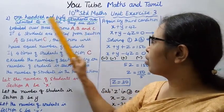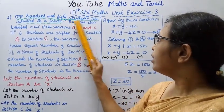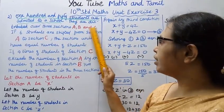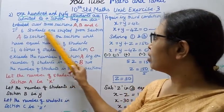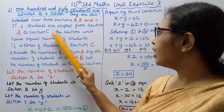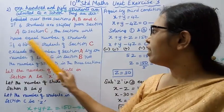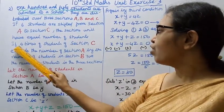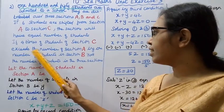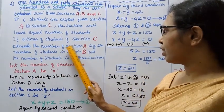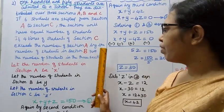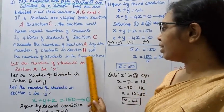150 students are admitted to a school. They are distributed over 3 sections: A, B and C. If 6 students are shifted from section A to section C, the sections will have equal number of students. If 4 times the students of section C exceeds the number of section A by the number of students in section B, find the number of students in the 3 sections.